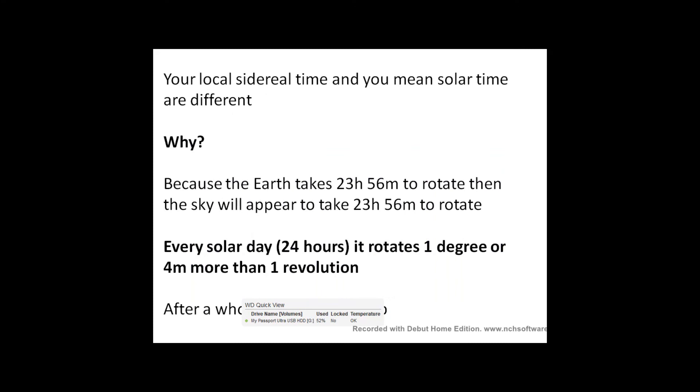Your local sidereal time and your mean solar time are different. They are totally different things. Why? Because the Earth takes 23 hours and 56 minutes to rotate, then the sky will appear to rotate every 23 hours and 56 minutes. And that means that every 24 hours, it will rotate more than 360 degrees. It will rotate about 1 degree or 4 minutes more than. And then after a whole year, which is 365 times 4 minutes, you'll end up back where you started from.